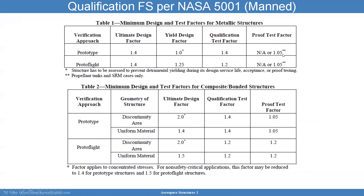For proto-flight — the article you're actually flying — the qualification test factor is lower but the design factor is higher. For a prototype — the article you're not flying — the factor is higher for the ultimate. The yield is kept to a higher value as well. The key distinction is whether the tested article is the one being flown.